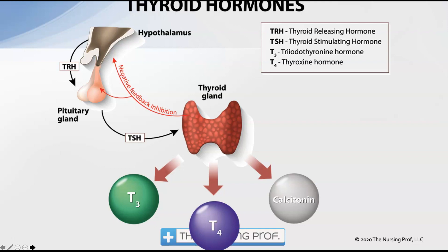First, a review of our thyroid hormones and the function that the thyroid gland has in the body. In order to release the hormones of the thyroid, we need to have a stimulus coming from the hypothalamus — that's thyroid releasing hormone. This then stimulates the pituitary to release thyroid stimulating hormone, which then stimulates the thyroid to produce T3, T4, and calcitonin. These are the three major hormones made by the thyroid gland.